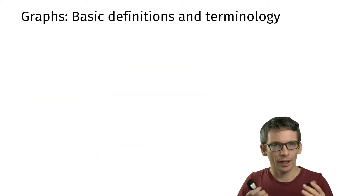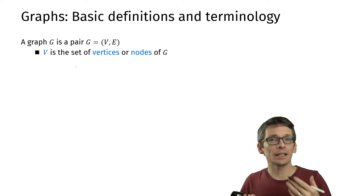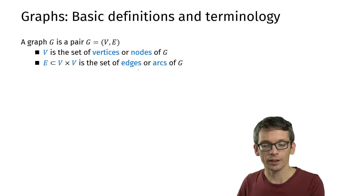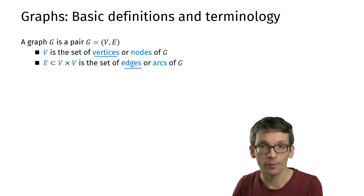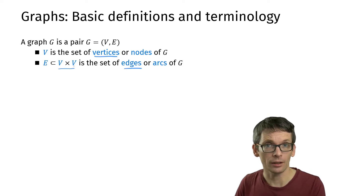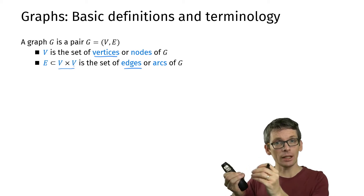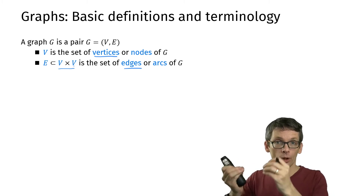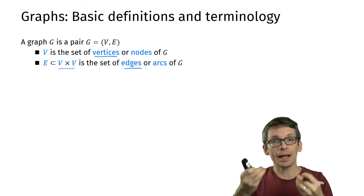What is a graph? A graph is a pair (V, E), where V is a set of vertices and E is a set of edges. Vertices are also often called nodes, and edges also arcs, but we will be talking about vertices and edges. An edge is a pair of vertices. In the first example we had cities as vertices and connections between pairs of cities as edges, or processes as vertices and a dependency between two processes as edges.